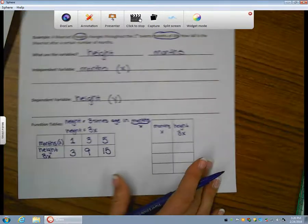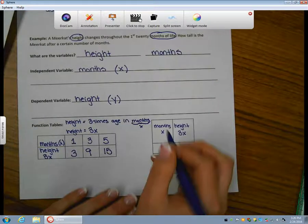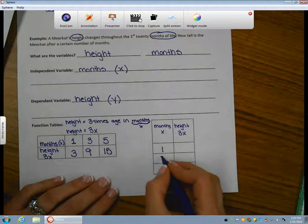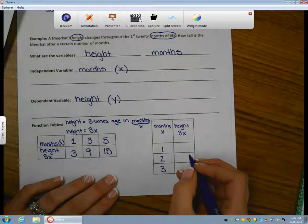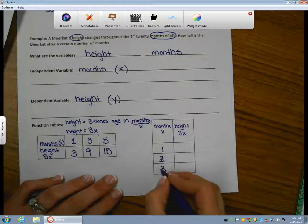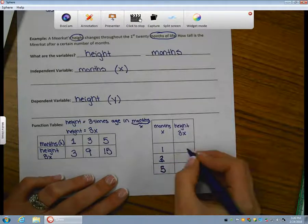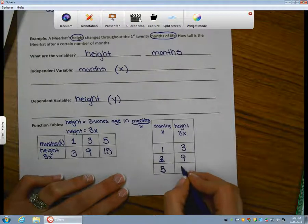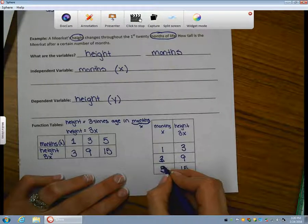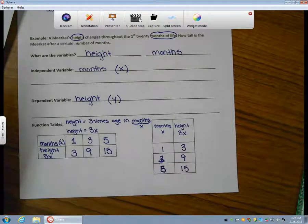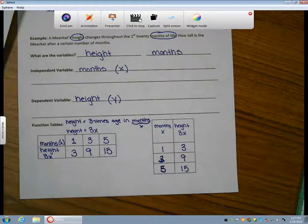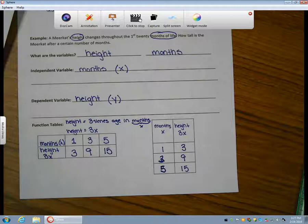Let's fill that same data into our vertical function table. Now that we have these function tables, we can graph this information in order to look at it on a coordinate plane. Before we do that, let's take a look at a coordinate plane and familiarize ourselves a little bit.